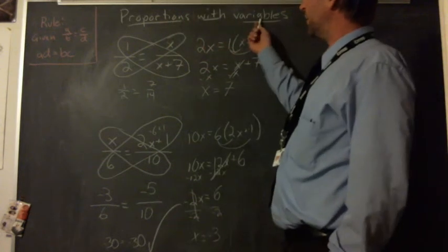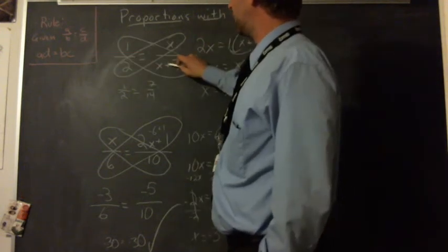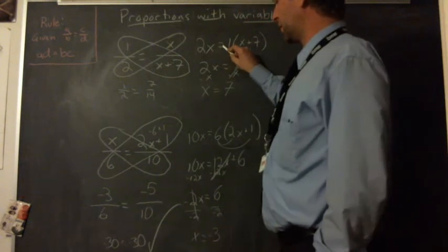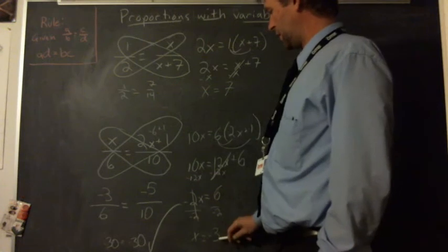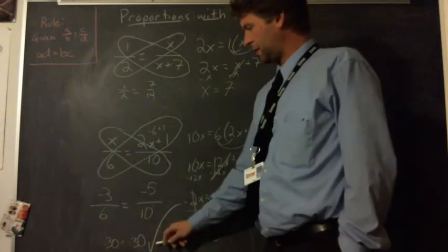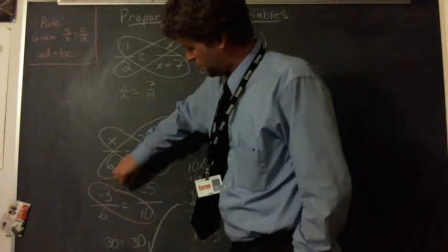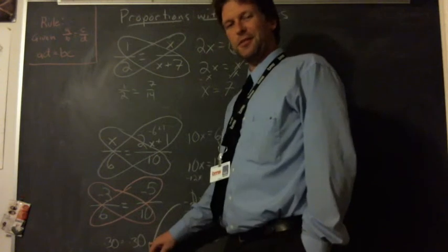Proportions with multiple variables. Still use the same rule. Multiply, multiply, and set the two equal. Solve out for x. Double check. Solve out for x. Double check. We can still use cross multiplication. Check your answer. Negative thirty equals negative thirty.